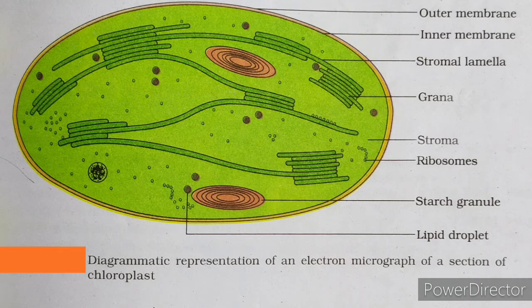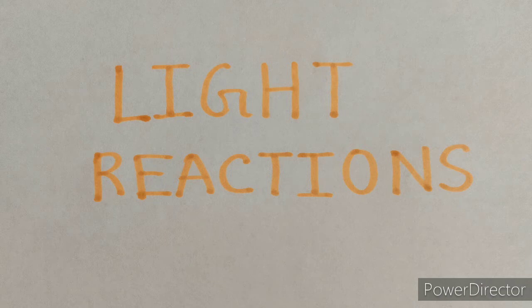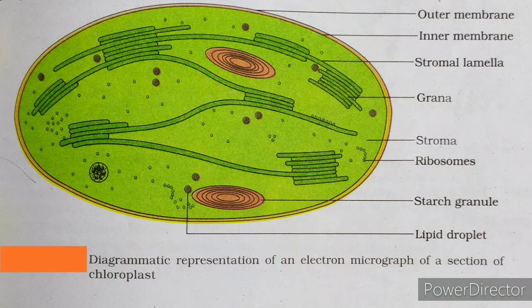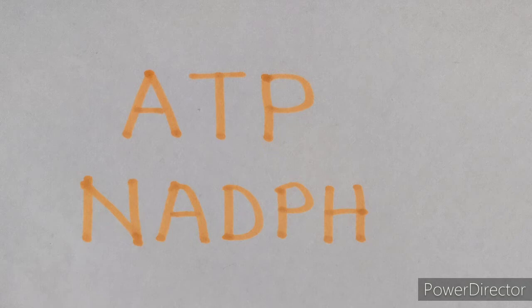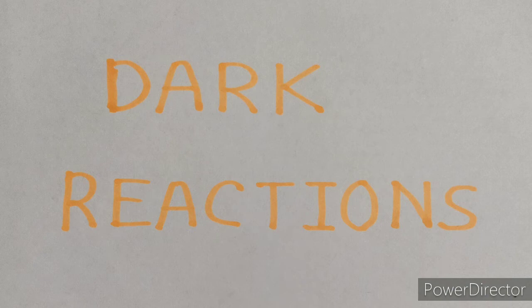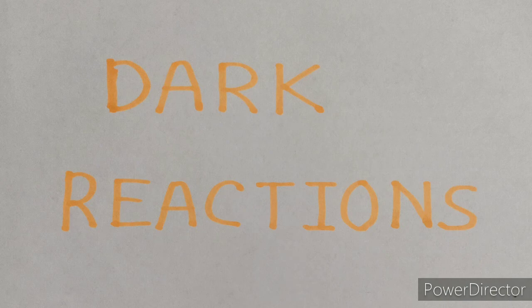In the stroma, enzymatic reactions synthesize sugar, which in turn forms starch. The former set of reactions, since they are directly light driven, are called light reactions or photochemical reactions. The latter are not directly light driven but are dependent on the products of light reactions — that is ATP and NADPH — and hence, to distinguish them, they are called by convention dark reactions or carbon reactions. However, this should not be construed to mean that they occur in darkness or that they are light-independent.